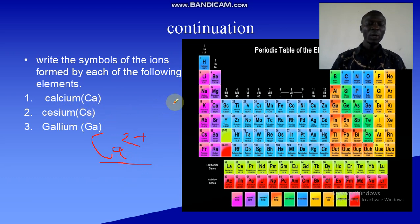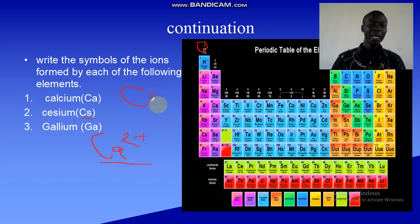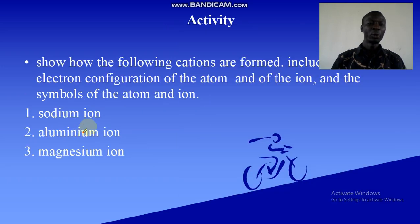For cesium (Cs), look for it in the periodic table — it is in group 1. That means its valency is 1, it loses 1 electron, and the number of positive charges on it will be positive 1. Its symbol is Cs⁺. Remember, we don't write the 1; the positive sign alone is enough to show that it is positive 1.